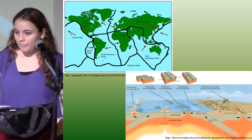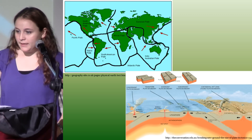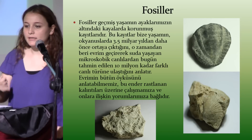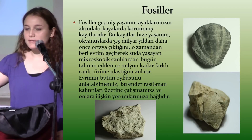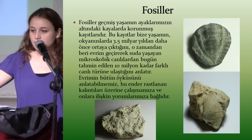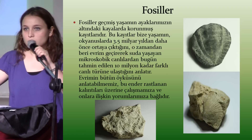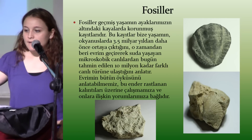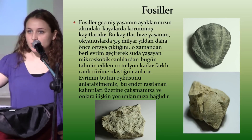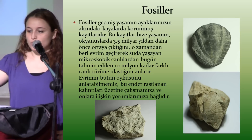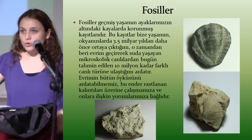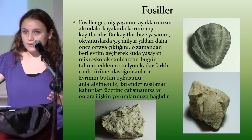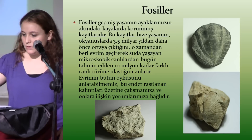Levhaların hareketine dayanan jeolojik evrim budur, temeli bu. Peki fosil nedir? Fosiller, geçmiş yaşamın ayaklarımızın altındaki kayalarda korunmuş kayıtlarıdır. Bu kayıtlar bize yaşamın okyanuslarda 3.5 milyar yıldan daha önce ortaya çıktığını ve bugün tahmin edilen 10 milyon farklı canlı türünün oluştuğunu gösteriyor. Evrimin bütün örgüsünü anlayabilmemiz için bu ender rastlanan kalıntılar üzerinde çalışmak önem kazanıyor.